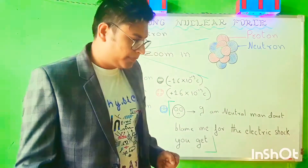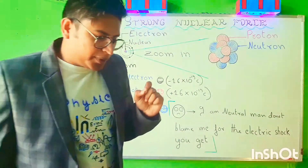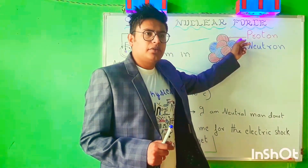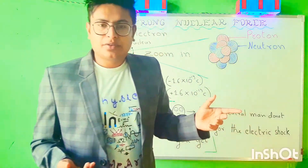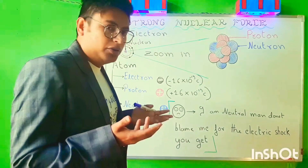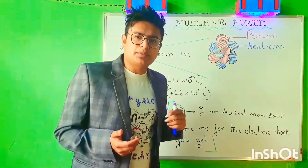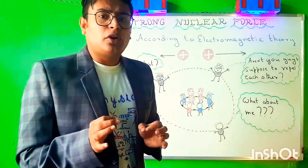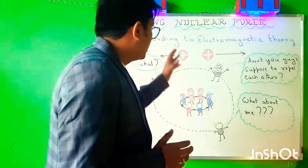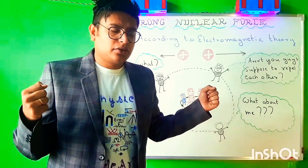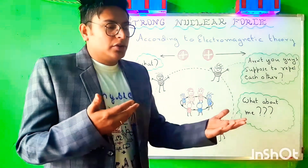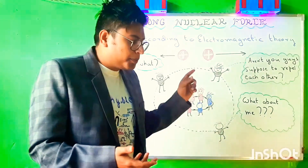The problem with this picture is that a proton is a positively charged particle. So, how is it even possible that we have positively charged particles sitting next to each other? Because according to electromagnetic theory, like charges should repel each other.